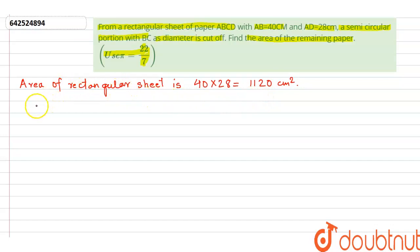But also it is given that on BC the semicircular portion is drawn. So first we need to find out BC. Now since opposite sides of rectangle are equal, therefore AD equals BC and BC is 28 centimeters.